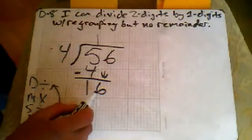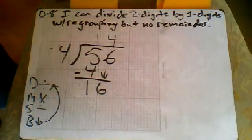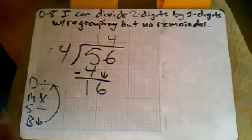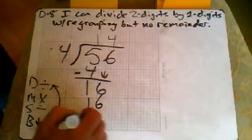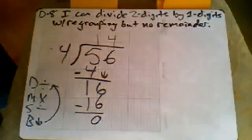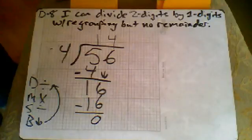Divide. Four goes into sixteen four times, or sixteen divided by four is four. And multiply your four times your four is sixteen. And you end up with a remainder of zero. So 56 can be divided into four different groups, fourteen in each of the groups.